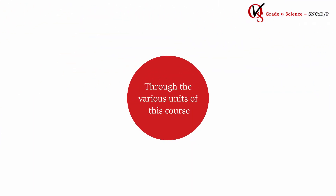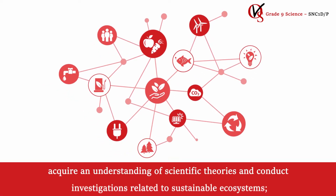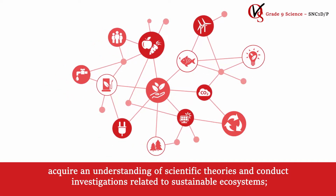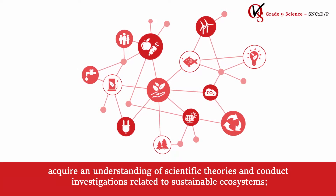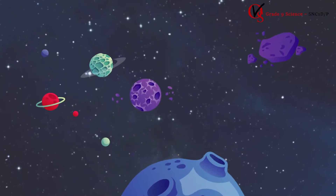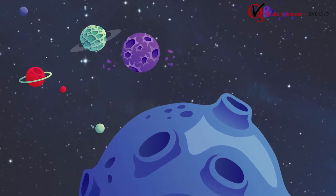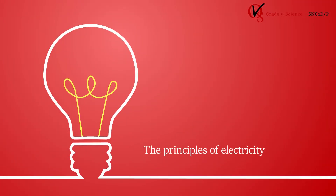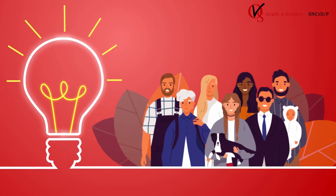Through the various units of this course, students will acquire an understanding of scientific theories and conduct investigations related to sustainable ecosystems, study atomic and molecular structures, and the properties of elements and compounds. They will explore the universe and discover its properties and components, and learn the basic principles of electricity that have helped shape our modern society.